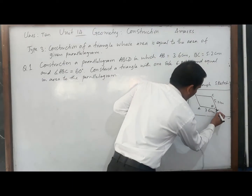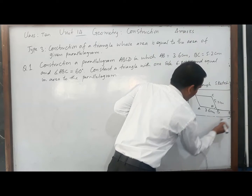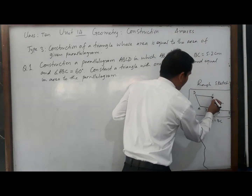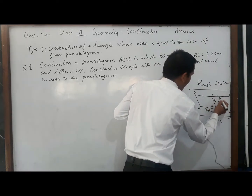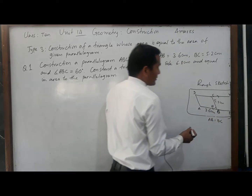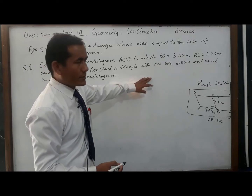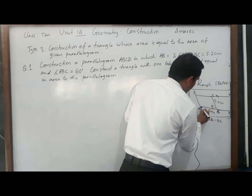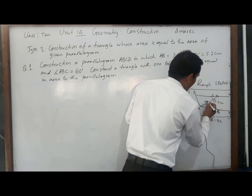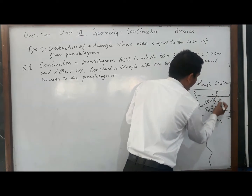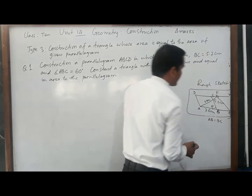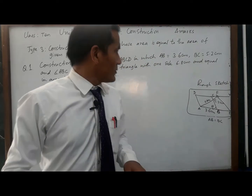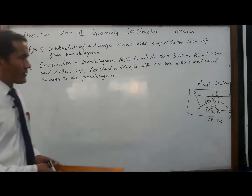To construct a triangle whose area equals the area of the parallelogram, we have to extend AB to E such that AB and BE are equal, and we have to produce the line DC to Y, which is parallel to the other. One side of the triangle is 6.8 centimeters, so with the help of a compass we draw an arc of 6.8 centimeters, give the name F, then join EF. Triangle AEF is the required triangle whose area equals the area of the parallelogram.